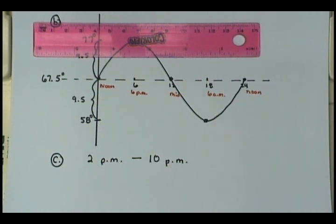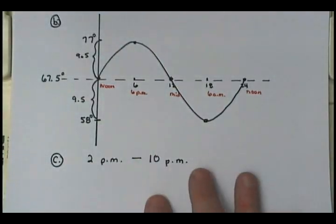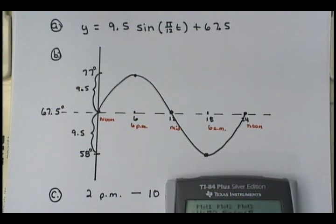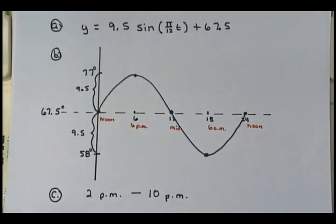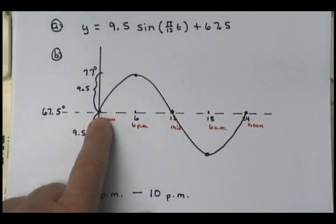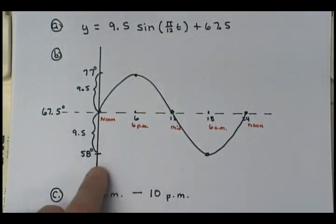Here's how to figure that out precisely: put the equation in your graphing utility. I'd set my window with x-min at 0, x-max at 24, x-scale at 6, y-min at 55, y-max at 80, and y-scale at 5. Let's see if that shows our graph.